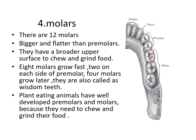Now coming to molars. There are twelve molars. The last one is also known as the wisdom tooth. Molars are bigger and flatter than premolars. In the case of plant-eating animals, the premolars and molars are well developed because they need to chew and grind their food.